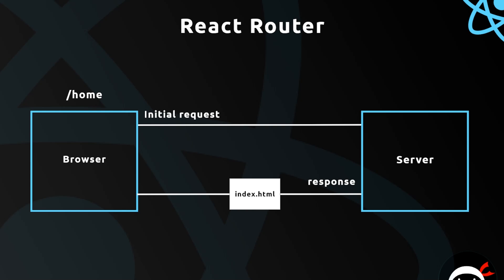We've already discussed that React apps are single page applications where only one HTML file is sent down to the browser from the server. So what happens if we want to see different pages, like an about page? Well, from the start, if we're in a browser and we make a request to the home page, we make that initial request to the server.